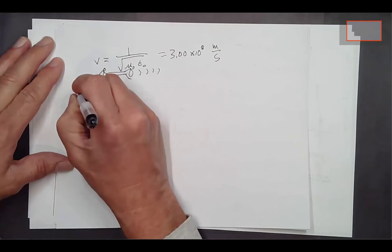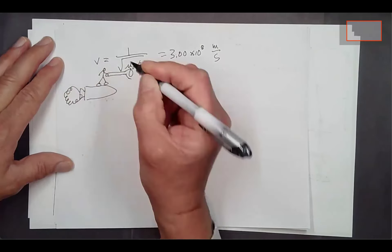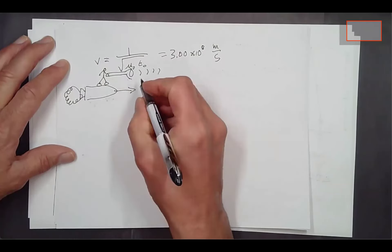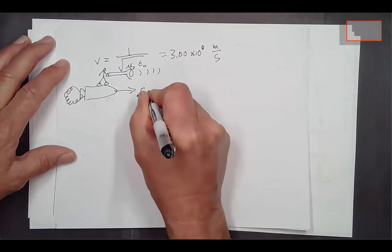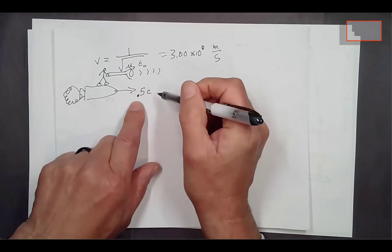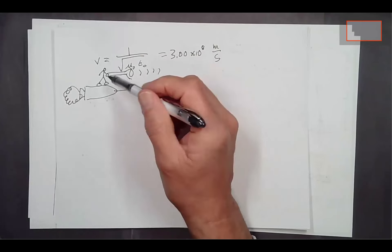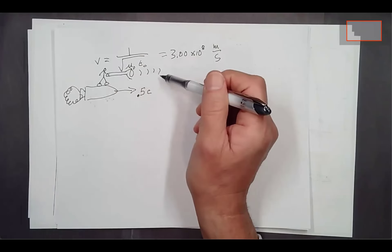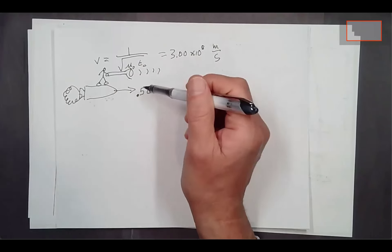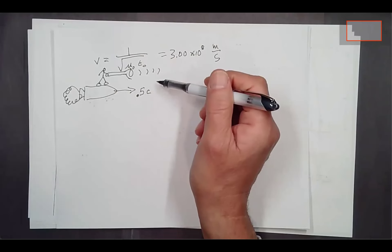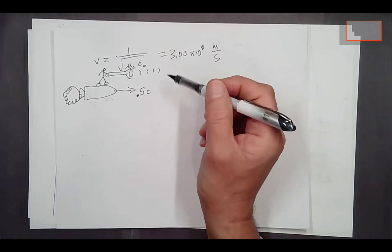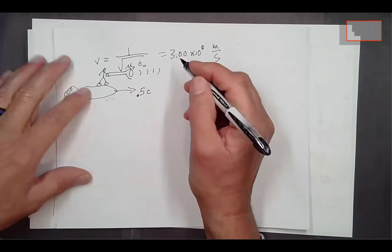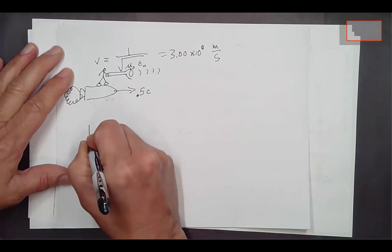Now suppose the rocket fires and moves in this direction at 0.5c — half the speed of light. The astronaut turns on the flashlight and measures the speed of the light moving away. The flashlight says it's moving away at the speed of light. That confirms Einstein's postulate.